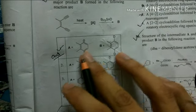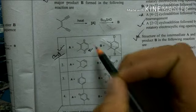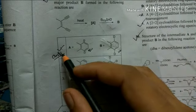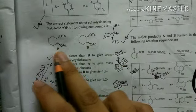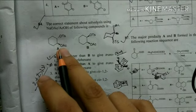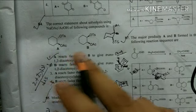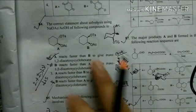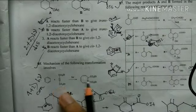The next question is a cyclotrimerization reaction — specifically a Wheland cyclotrimerization. A diradical forms, and deuterium addition gives the product, so option 1 is the correct answer. After that is a solvolysis reaction: if the groups are trans, neighboring group participation can occur, and the incoming nucleophile also adds trans. Option 1 — A reacts faster than B and gives the trans product — is the correct answer.